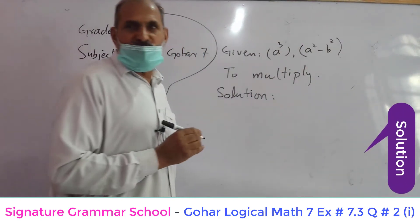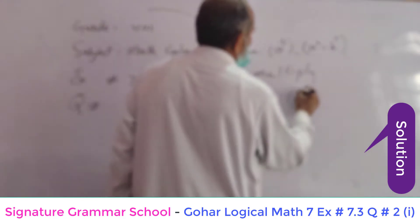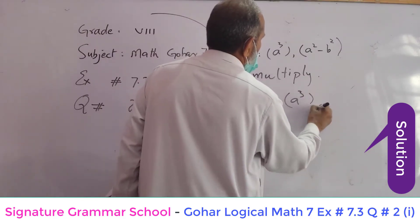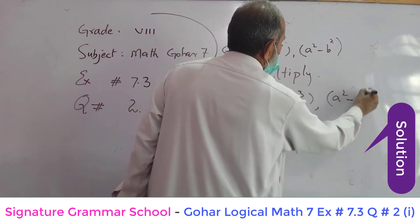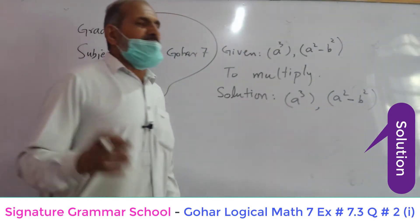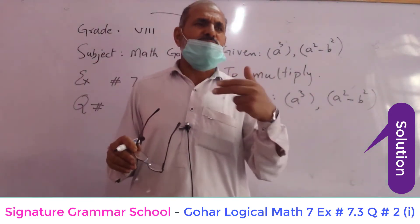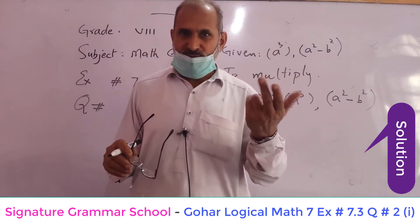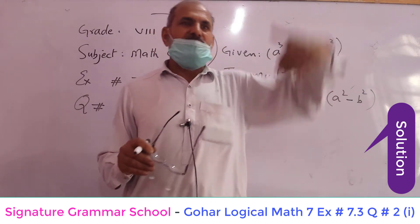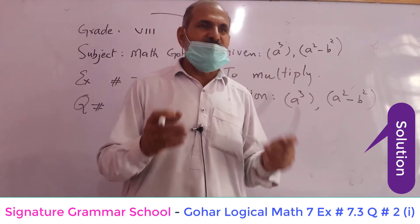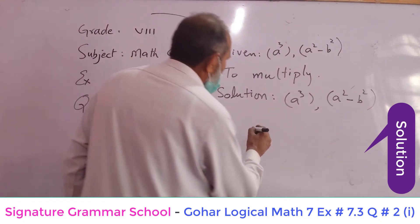We can rewrite the same values once again: a cube and a square minus b square. Now we can multiply these two values with two methods — one is horizontal, in a row, and the second is vertical, in a column.